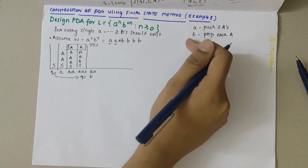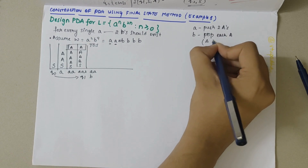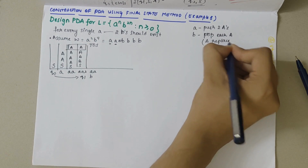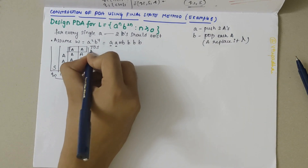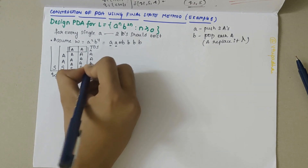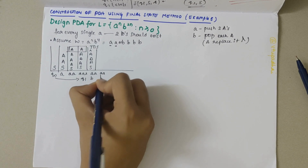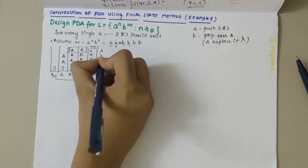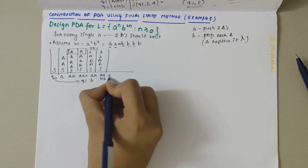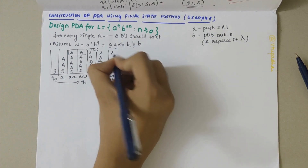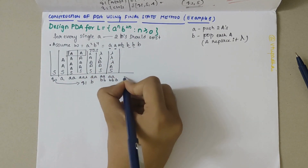Now I have 'b', so for every 'b' you should pop each A. Popping each A means replacing it by lambda. When the first 'b' is encountered I'll replace the topmost A by lambda. Again 'b' is read so another A becomes lambda. On the third 'b' being read as input, again a lambda replaces an A.